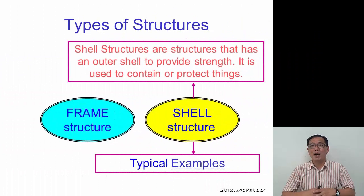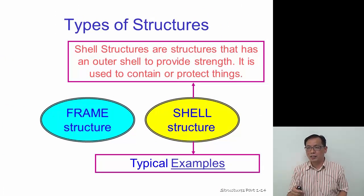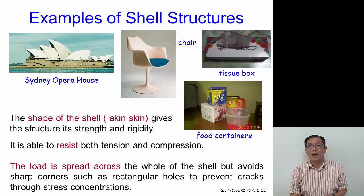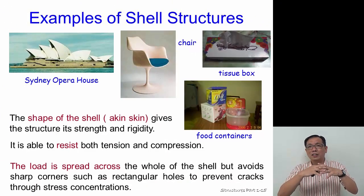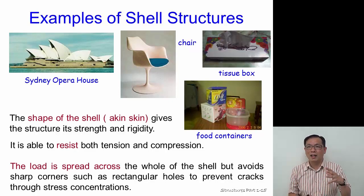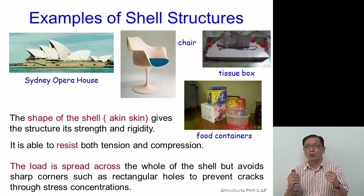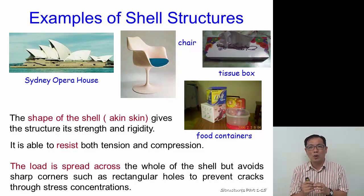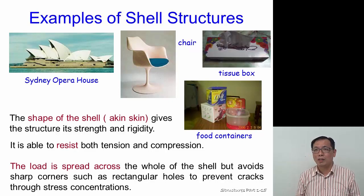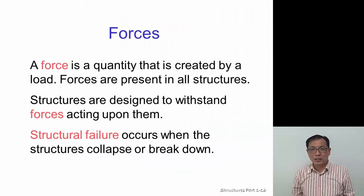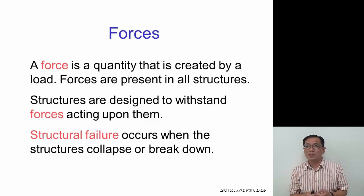Shell structures are structures that have an outer shell that provides the strength, and can be used to protect or contain things. For example, the Sydney Opera House consists of shell structures where the outer skin gives it strength and rigidity, resisting both tension and compression. Examples include chairs, tissue boxes, and food containers. The load is spread across the whole shell, and you normally avoid sharp corners to prevent cracks through stress concentration.